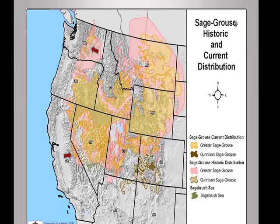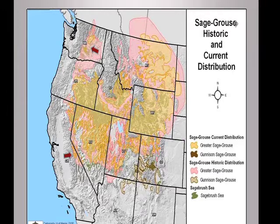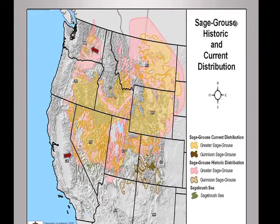There are two distinct population segments of greater sage-grouse marked on this map with two red arrows. The Columbia Basin distinct population segment occurs in Washington as those two yellow subpopulations, isolated from other greater sage-grouse populations by hundreds of miles. The other arrow in California points to the bi-state or mono-basin distinct population segment, which is genetically more distinct from greater sage-grouse than even Gunnison sage-grouse.